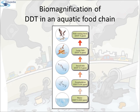In water, the DDT amount is 0.003 ppm (parts per million). When taken up by zooplankton, it increases to 0.04 ppm. When zooplankton are eaten by small fishes, the DDT level again increases to 0.5 ppm. When large fish eat these small fishes, the DDT level increases to 2 ppm. Finally, fish-eating birds have a DDT amount of 25 ppm in their body. This process is called biomagnification.